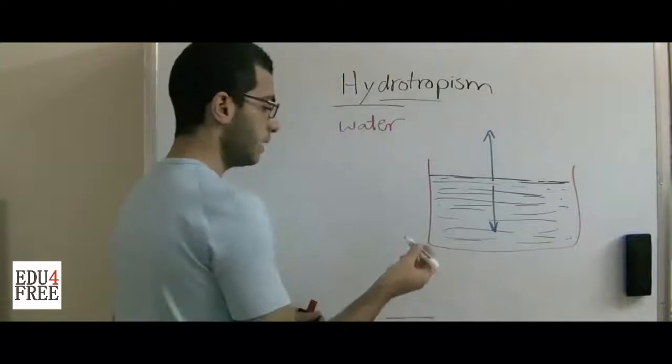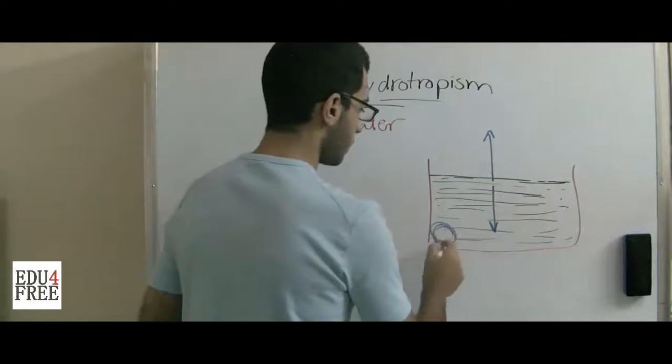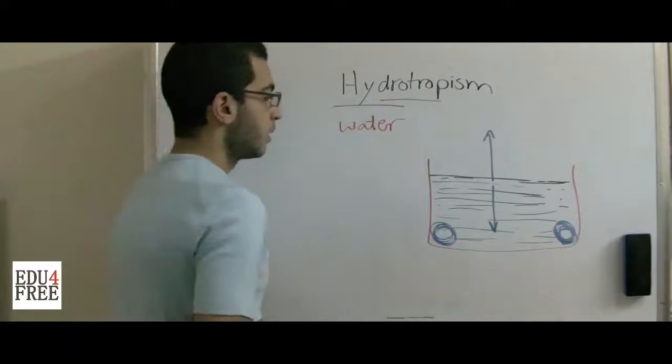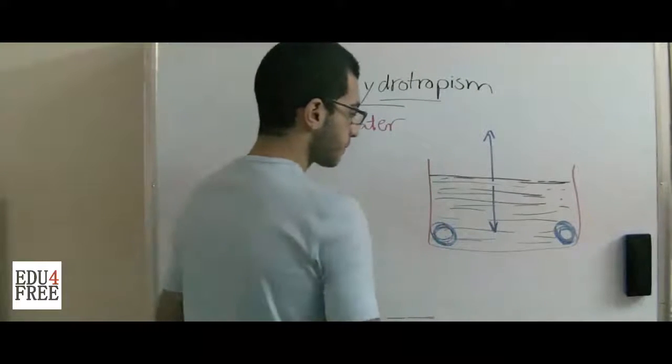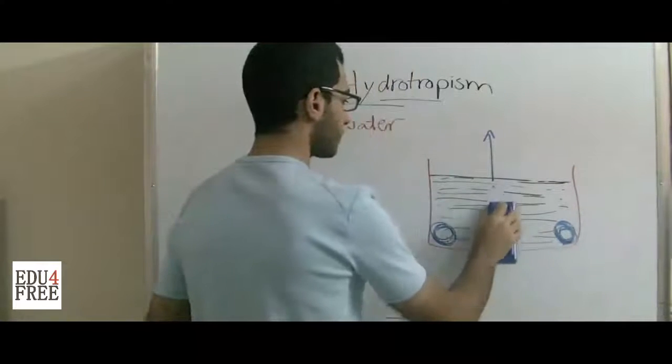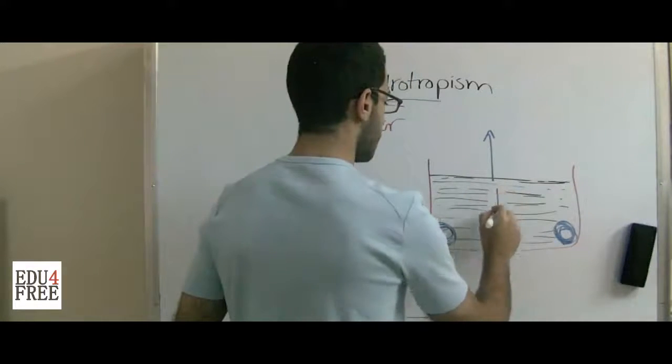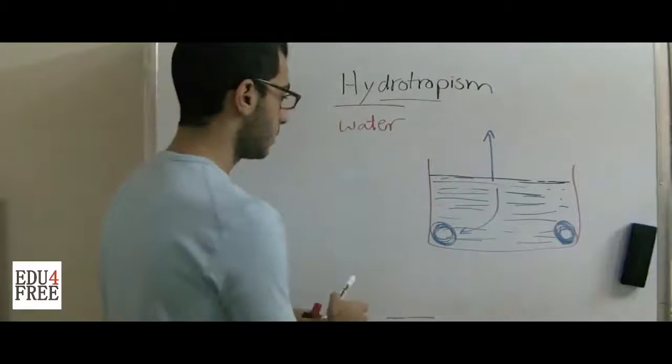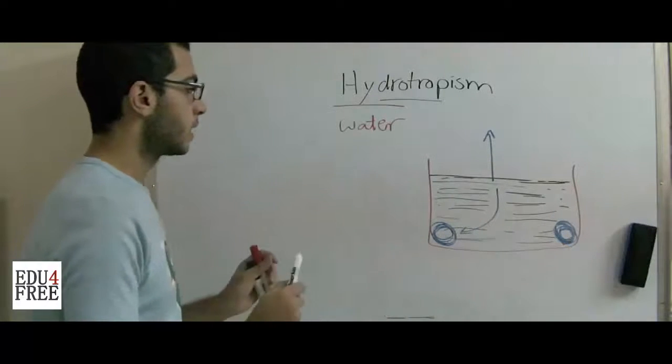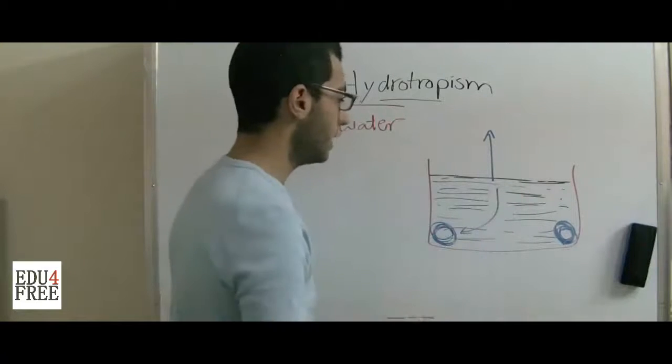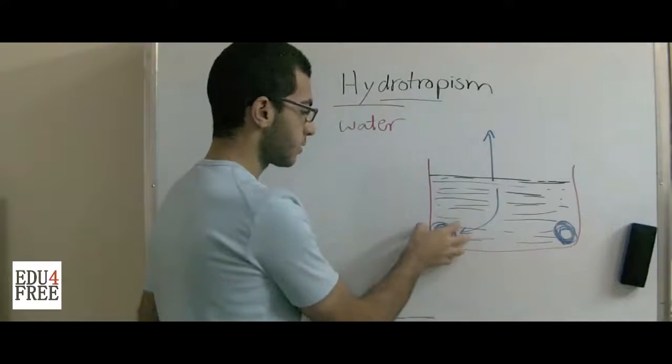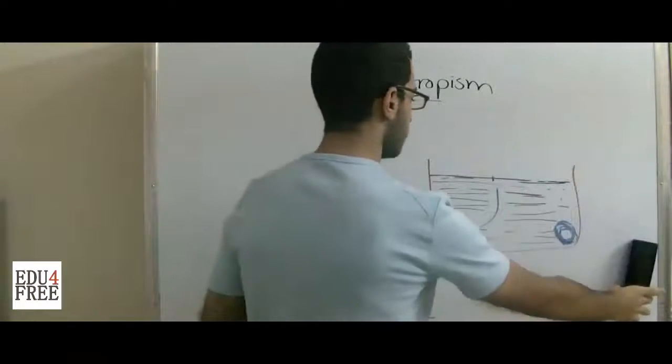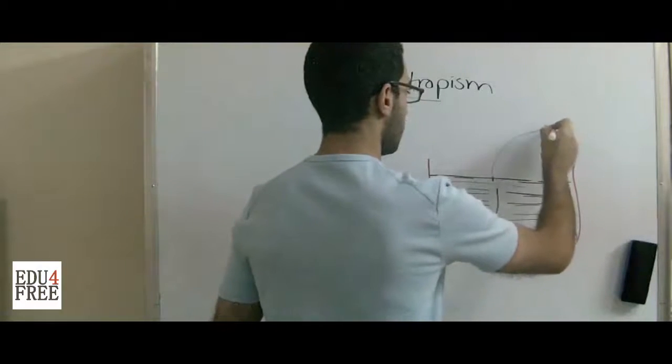But if water was only found in the corners, say it was found at that corner, the root will grow like this. It will go to the area where water is found, and this doesn't contradict with gravity because the root is already growing downwards, but it's going in search of water. And the stem will grow in the opposite direction like that.